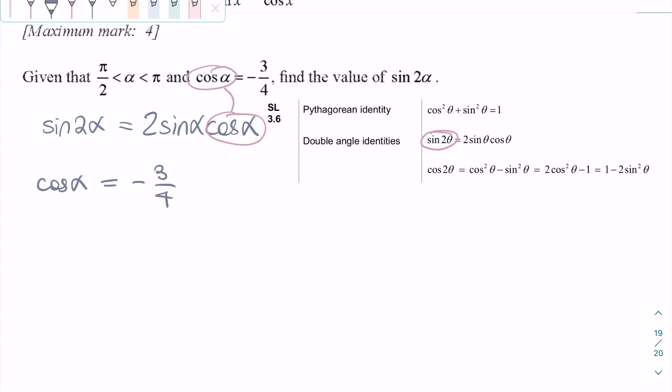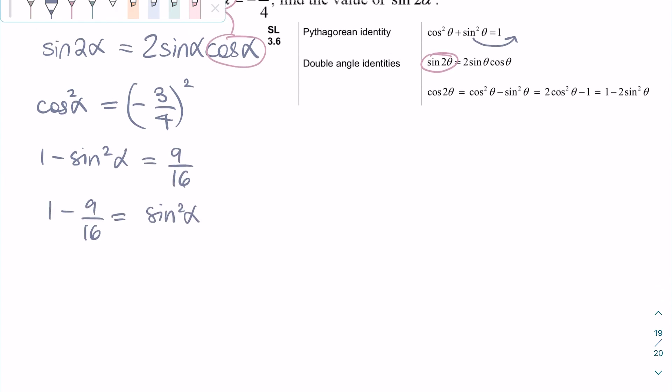We can do this by using the information that we know. Cosine alpha can be squared, so we can square both sides, and then we can use a Pythagorean identity. We can rearrange the identity found in the formula booklet to get cosine squared equals one minus sine squared. Then we can rearrange this equation, and we get that sine alpha equals square root of seven over four.